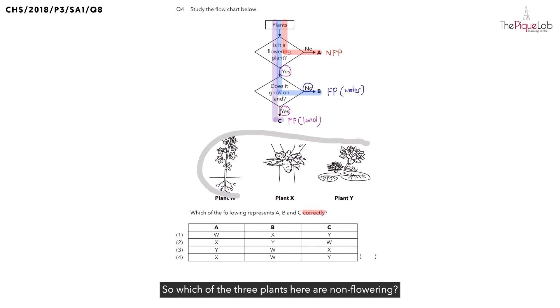Which of the three plants here are non-flowering? We can see clearly it must be plant X. Now, X is a non-flowering plant, which means the answer for A must be plant X.